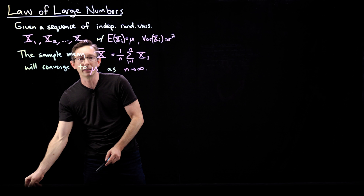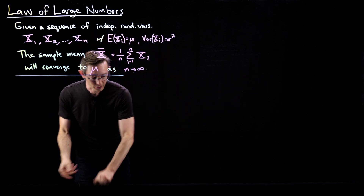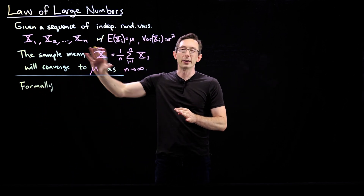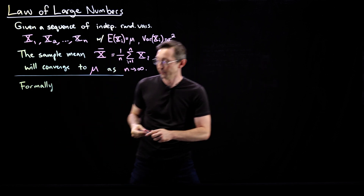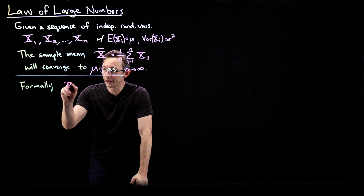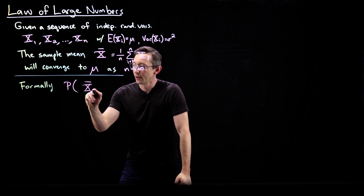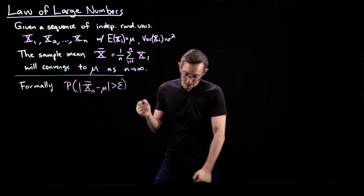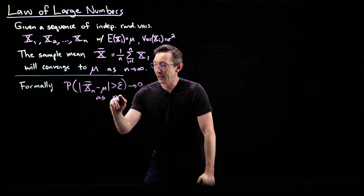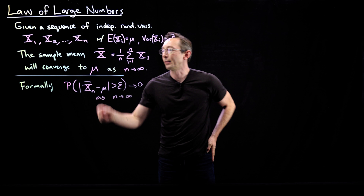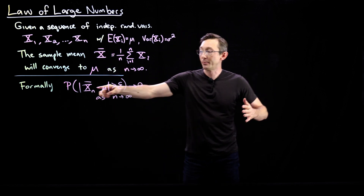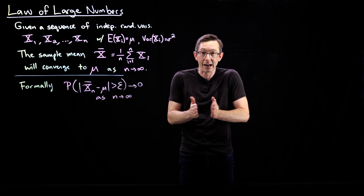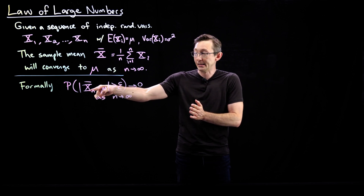There's a slightly more formal way to say this. Formally, what this means is: the probability that |x̄ - μ| is bigger than epsilon goes to zero as n goes to infinity. That's what we mean by this sample mean converging to μ — the probability of my sample mean being more than epsilon away from μ goes to zero. So I get within an arbitrary epsilon of my actual mean with my sample mean as n goes to infinity.